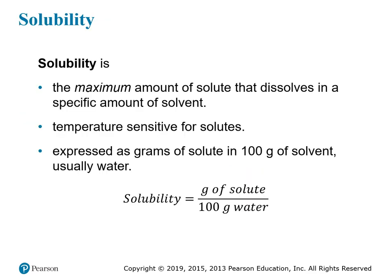Solubility in chemistry refers to the maximum amount of a solute that can dissolve in a specific solvent. Sometimes we talk casually about whether something is soluble — if it dissolves — or insoluble if it doesn't. But when we're trying to quantify that, we're talking about the maximum threshold of solute in a given solvent. That number is called the solubility, sometimes the maximum solubility or the solubility limit.